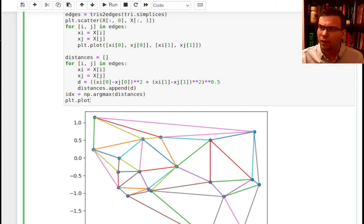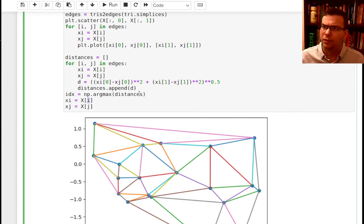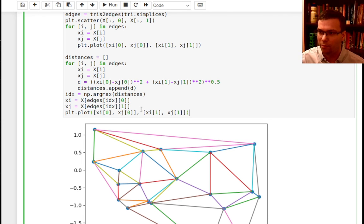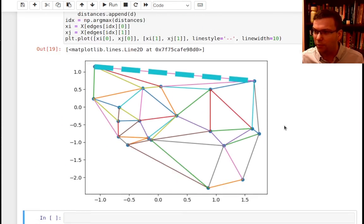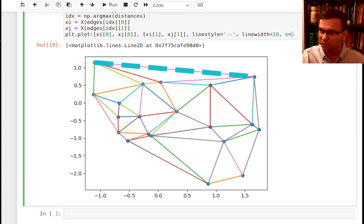I'll do the same thing here. I'll say xi is equal to x at edges idx zero. xj is equal to x at edges idx one. So I'm pulling out here the index of the edge, which has the maximum distance. And now I'm going to pull out the two points that are associated to that edge. And let me go ahead and then just plot them. And I'll say line style equals dashed here. And then I'll say, what is it? Line width equals, I'll make it big. Oh, that's too big. Okay, anyway, yes. So there was the big edge. Maybe I'll just make the highlight black here.